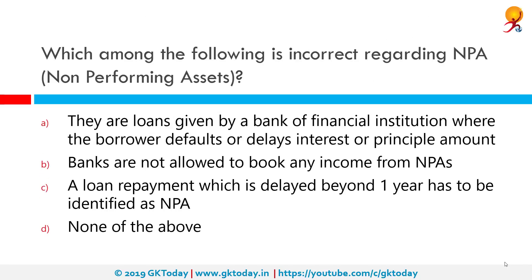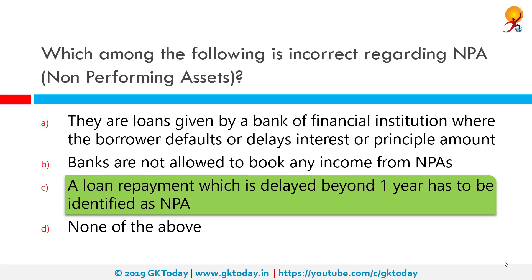Which among the following is incorrect regarding NPA or non-performing assets? Option C, which says a loan repayment delayed beyond one year has to be identified as NPA, is incorrect. The correct time given is 180 days, that is six months. A loan repayment which is delayed beyond six months has to be identified as NPA.